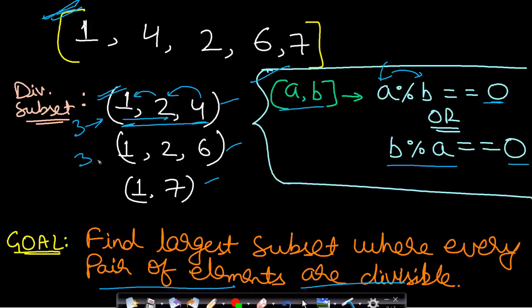Similarly, another subset also has length three and another has length two. We want to return the largest subset. Since there are two largest subsets, we can return any one — order is not important. We could return [4, 2, 1] or [1, 2, 4] or [1, 2, 6]. This is the entire problem.